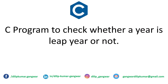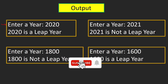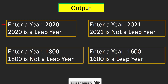In this video, we will understand a program which will take a year from the user and check whether that year is a leap year or not. These are some sample outputs. Our program should ask for a year from the user — if we enter 2020, we should get that 2020 is a leap year. If we enter 2021, the program should say 2021 is not a leap year. If we enter 1800, that is not a leap year, and 1600 is a leap year.